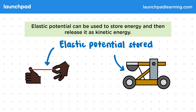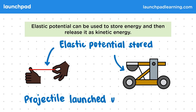When we release the device, the projectile gains kinetic energy from the elastic potential and is launched at high speed. You don't need to be able to recall these specific examples of how elastic potential is used, but you may be asked to describe the energy changes in these and other similar examples in an exam.